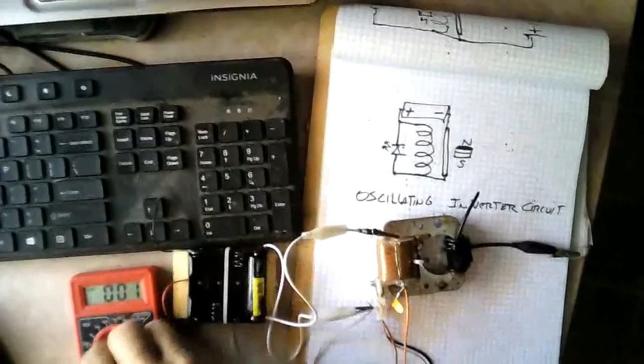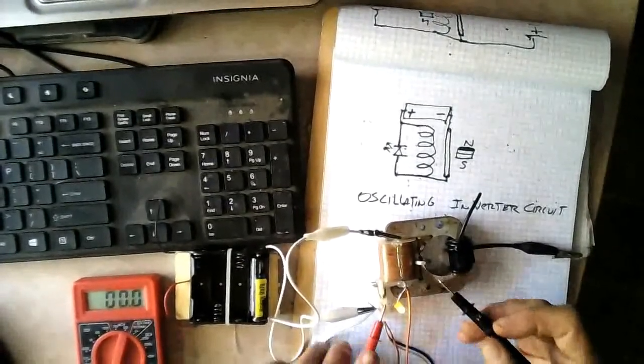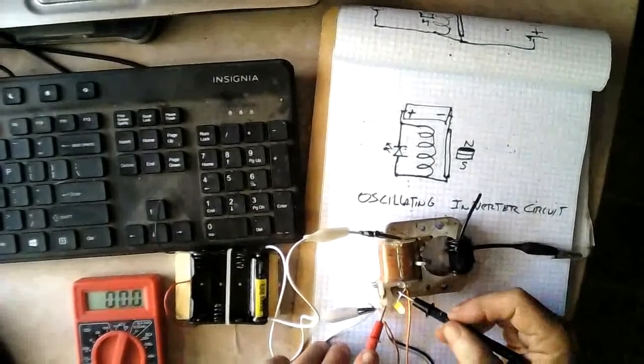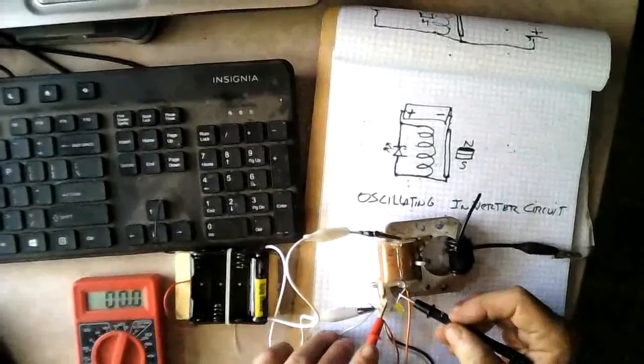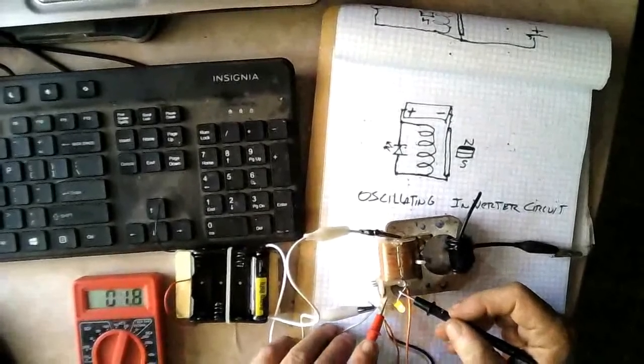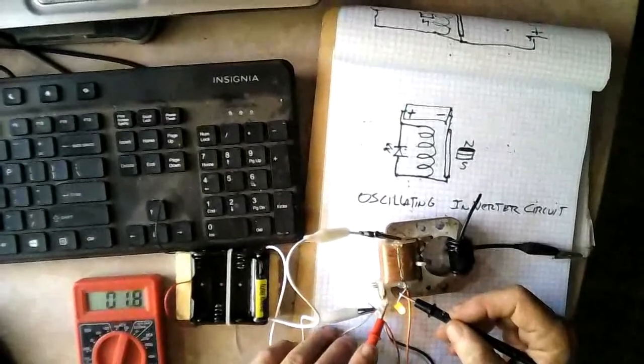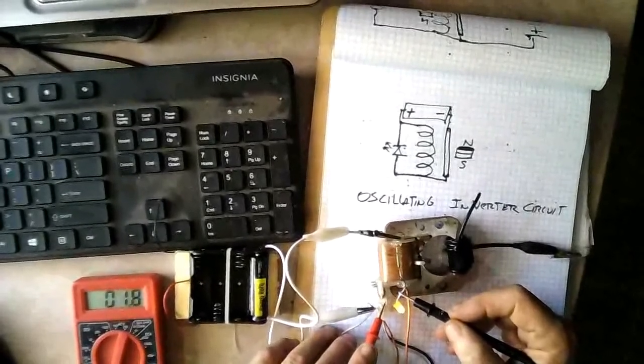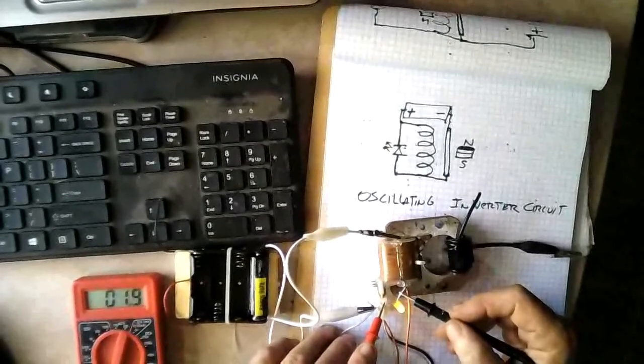Now you know that that ain't right because that LED ain't going to light on 0.73 volts. But if you switch over here to AC, and then you measure it, you see that we've got 1.9 volts. Between 1.8 and 1.9 volts.